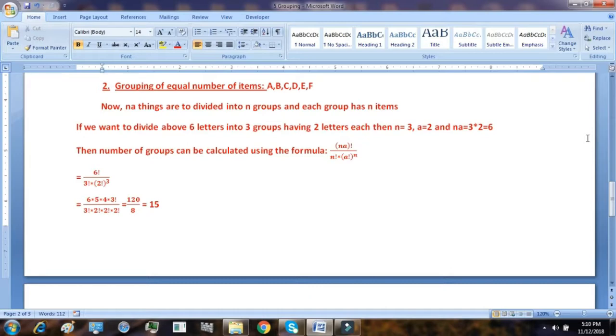Then in this case, N equal to 3, A equal to 2. So NA becomes 3 into 2 equal to 6. Then the number of groups or the number of total groups which can be formed can be calculated using the formula: NA factorial upon factorial N into factorial A to the power N.